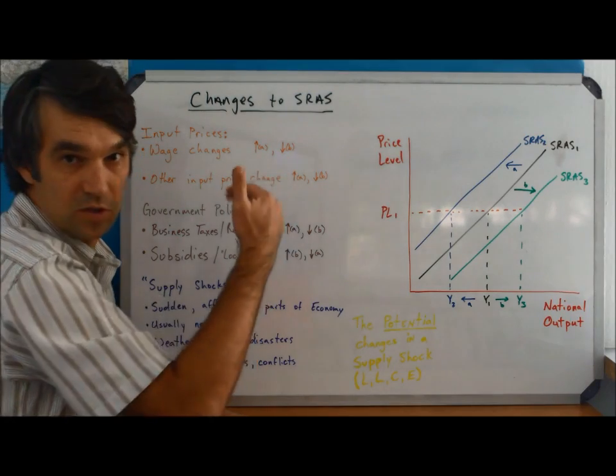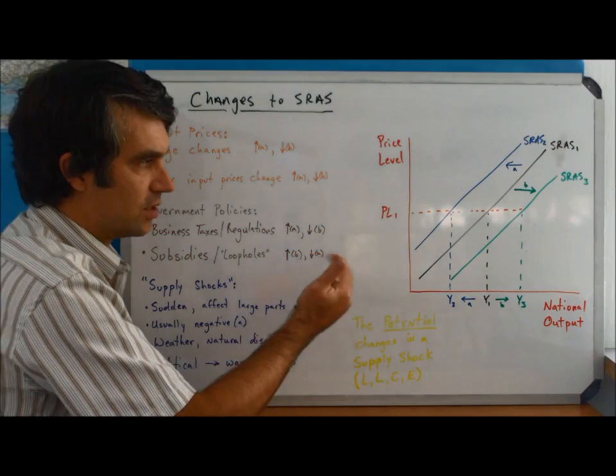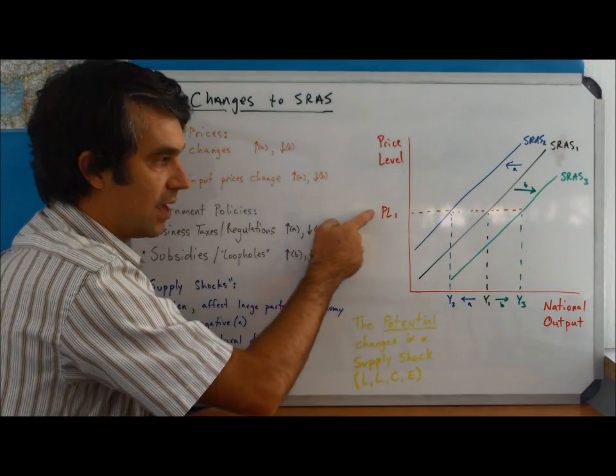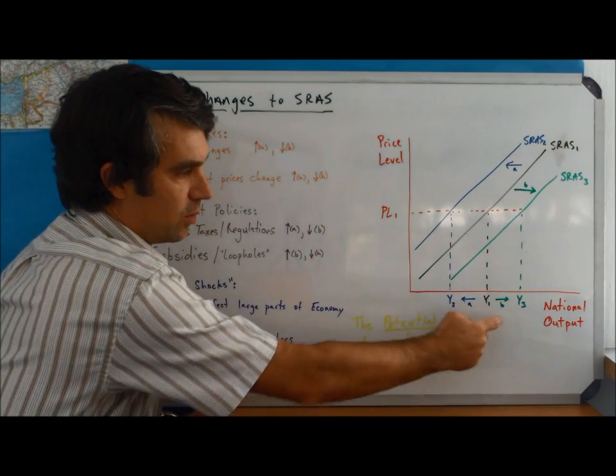It'll be just the opposite. If wages are lower for some reason, we're going to be more willing to supply goods and services at each price level. Therefore, we'd see a shift to the right, shown by arrow B.